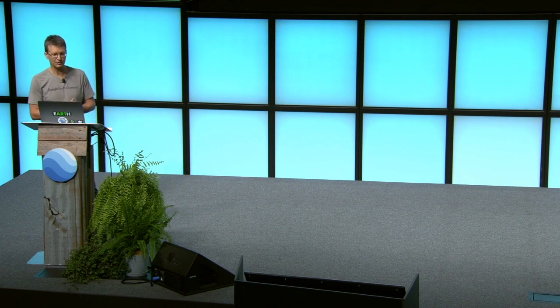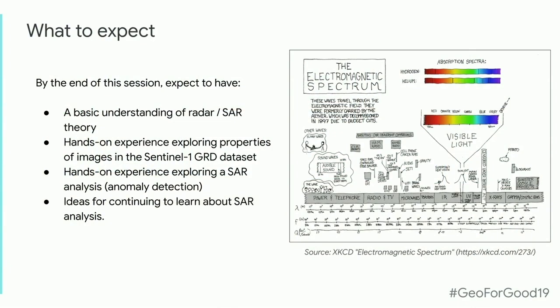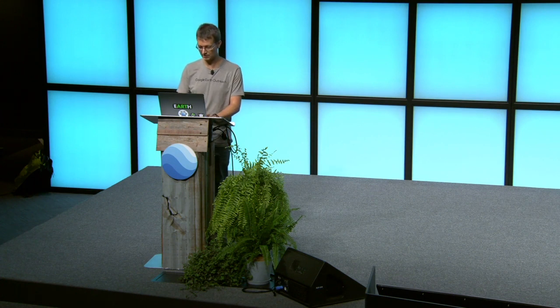By the end of this session, there are a few things I would expect you to have. One is a basic understanding of radar and SAR theory — not really deep, but some of the major concepts. Some hands-on experience exploring the Sentinel-1 GRD data set available in Earth Engine. Some experience with a particular type of SAR analysis — anomaly detection. And finally, links to where you might want to go to continue learning more about SAR.